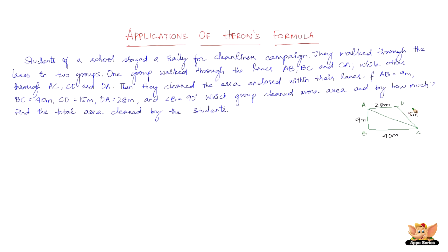This is the figure of the lanes. So one group walks through A, B; B, C; and C, A. While the other group walked through A, C; C, D; and D, A.